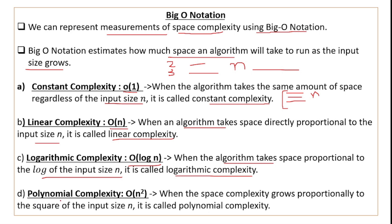Next we have polynomial complexity, written as O(n²) — order n squared or big O of n squared. When the space complexity grows proportional to the square of the input size n, it is called polynomial complexity. You can also call this quadratic space complexity.